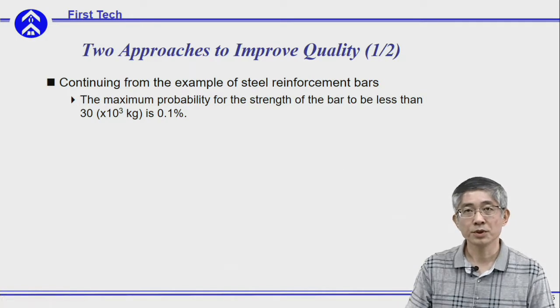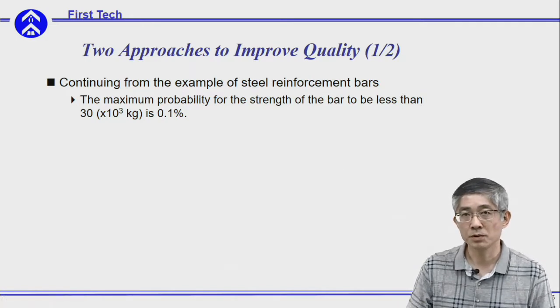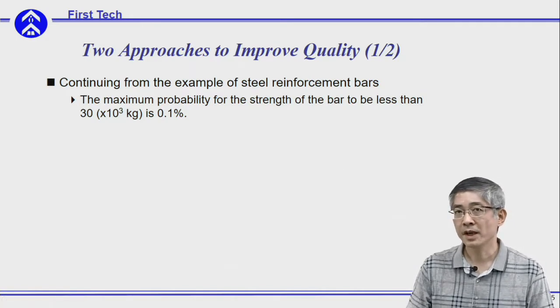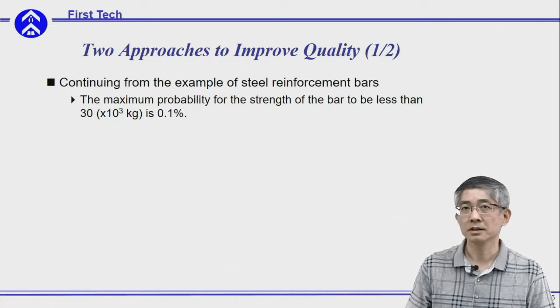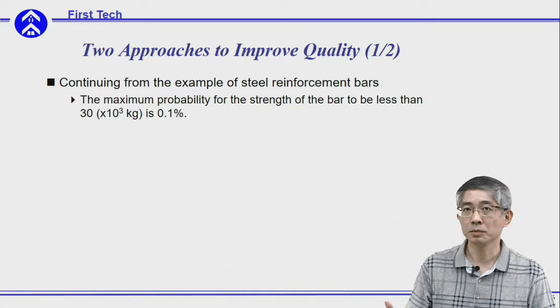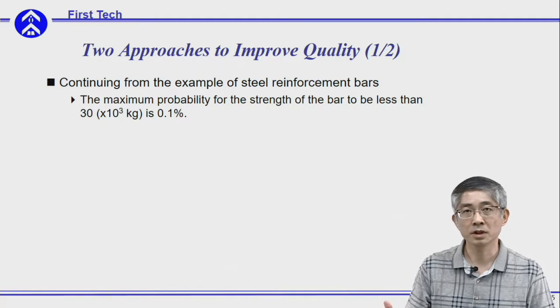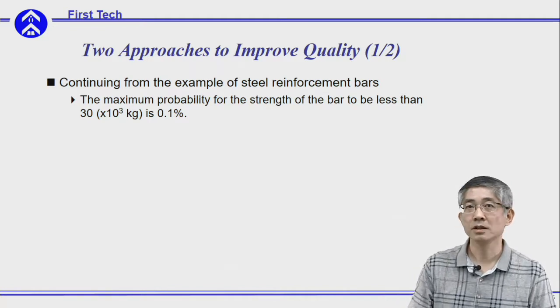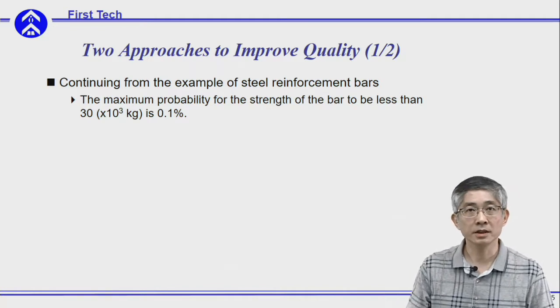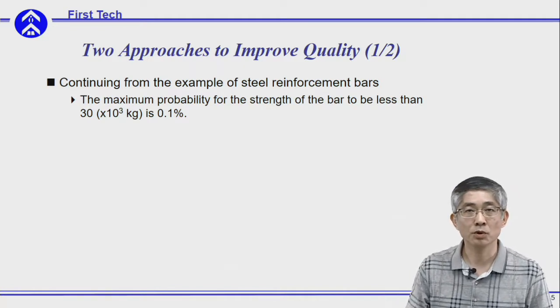From this calculation, you find that the cumulative probability for the current batch is greater than the required 0.1%, meaning the batch does not meet the specification.